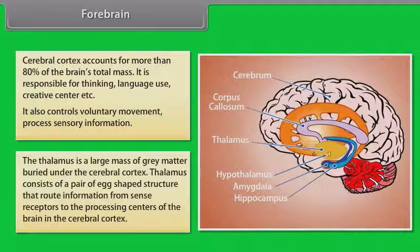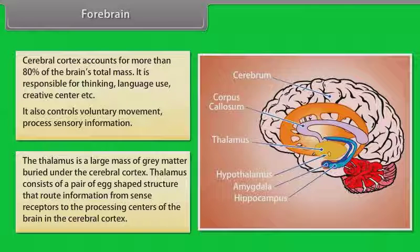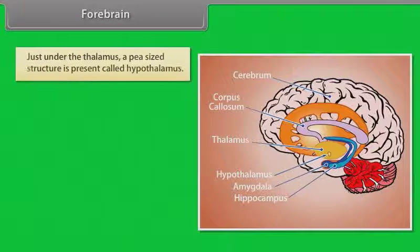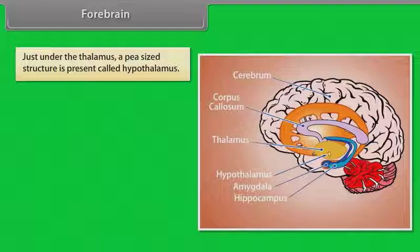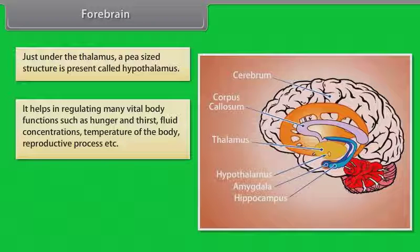The thalamus is a large mass of grey matter buried under the cerebral cortex. It consists of a pair of egg-shaped structures that route information from sense receptors to the processing centers of the brain in the cerebral cortex. Just under the thalamus, a pea-sized structure called the hypothalamus helps in regulating vital body functions such as hunger and thirst, fluid concentrations, body temperature, and reproductive processes.